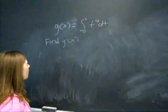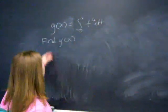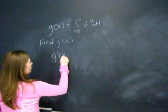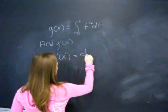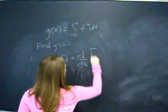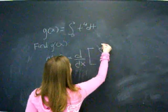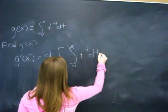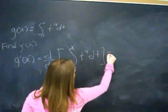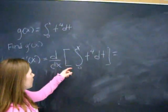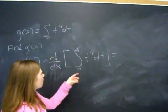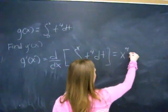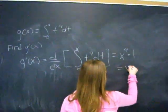So we want to find g prime of x. So we have to differentiate both sides with the original function g of x. According to the second fundamental theorem, we evaluate the integral at the upper limit of the function, giving you x to the fourth times the derivative of the upper limit, which in this case is 1.